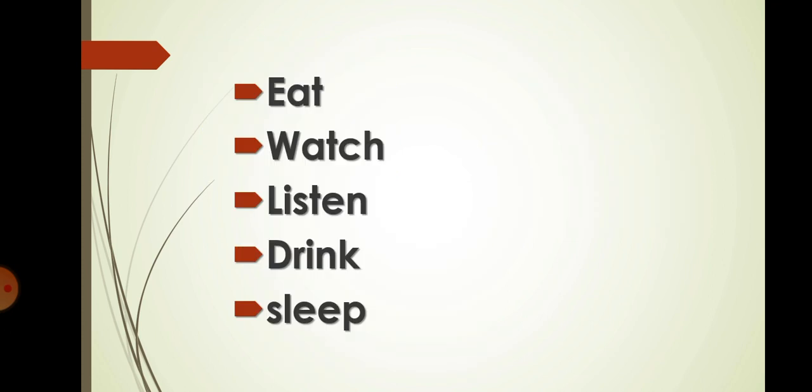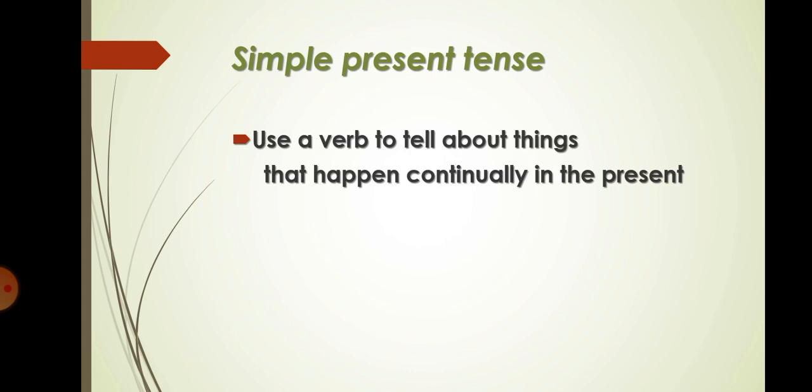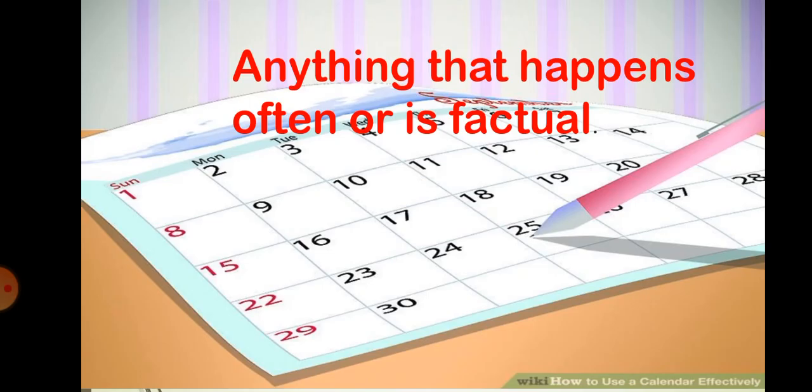Take a look at the simple present tense verbs, what they look like and when to use them. We use a verb to tell about things that happen continually in the present. We can say that everything that is going to happen in the present and often in the past is also part of the tense. Like every day, every month or every week, we use simple present tense for anything that is happening often or happen in a factual way.